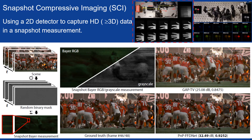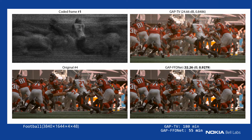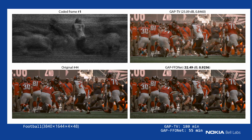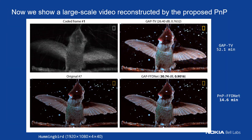Existing algorithms — we can only run GAP-TV, which is a total-variation-based algorithm, and it still needs around three hours. For other algorithms it's just too slow. For the deep learning approach, like E2E, you have to train a very big network because the data size is so large. With our proposed PnP-FFDNet, we can finish within one hour and the quality is very good. You can see the video here — PSNR is higher than 30 dB.